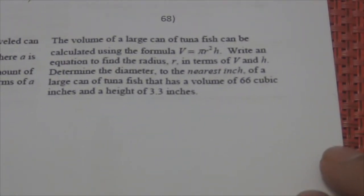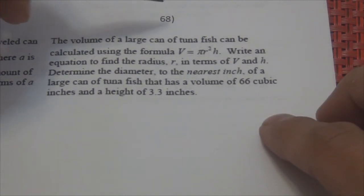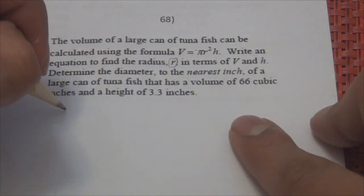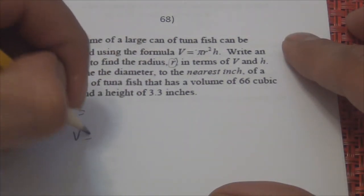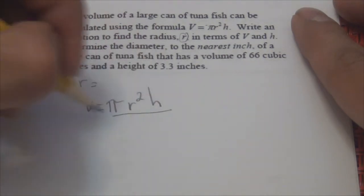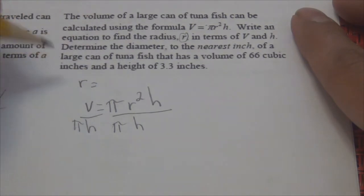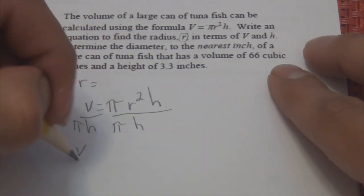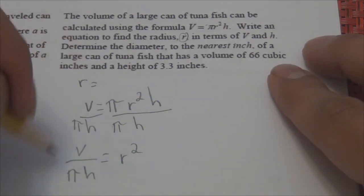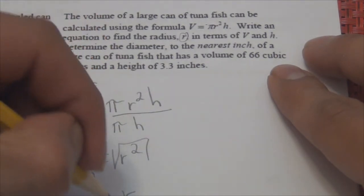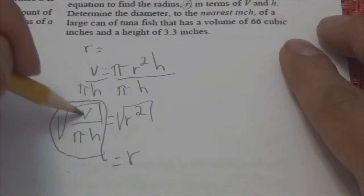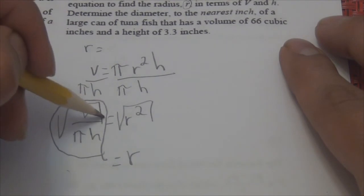The volume of a large can of tuna fish can be calculated using V equals pi R squared times H — basically like a cylinder. Write an equation to find the radius, so your equation should look like R equals something. Divide by pi and H, take the square root, and R equals the square root of V over pi H. The whole expression must be within the square root.